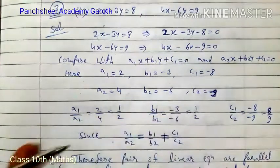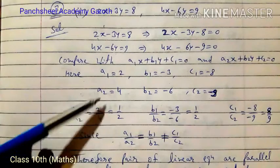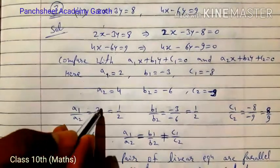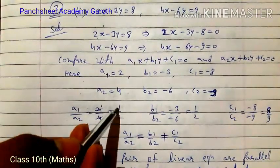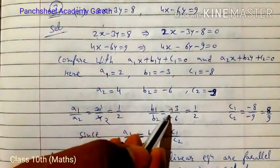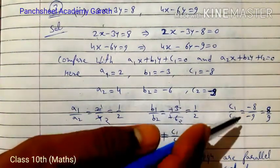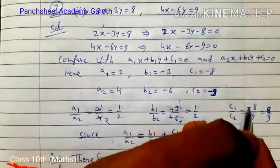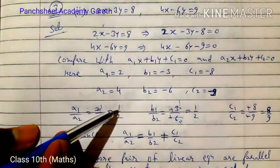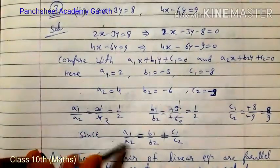Now we find the ratios. a1/a2 = 2/4 = 1/2. b1/b2 = -3/-6 = 1/2. So a1/a2 equals b1/b2, both equal 1/2.